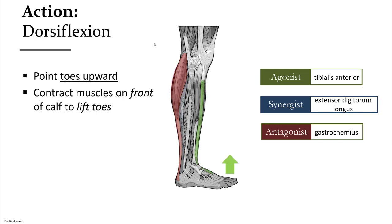In the opposite motion — dorsiflexion, or lifting the toes up — the muscle on the front of the calf is now the agonist or prime mover, while the calf muscles on the back are the antagonist.